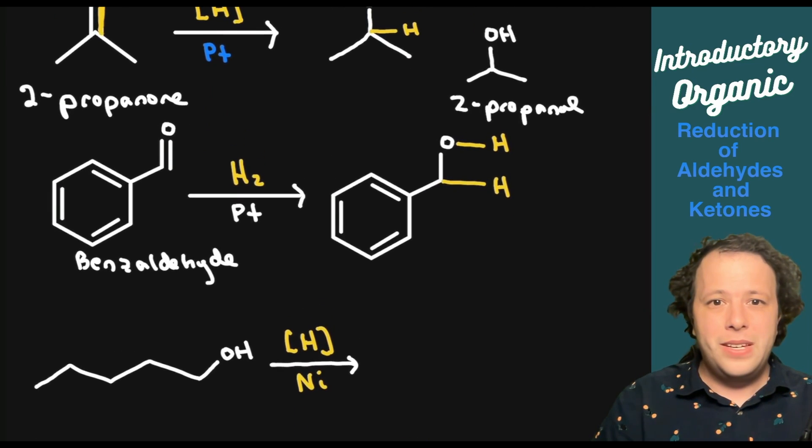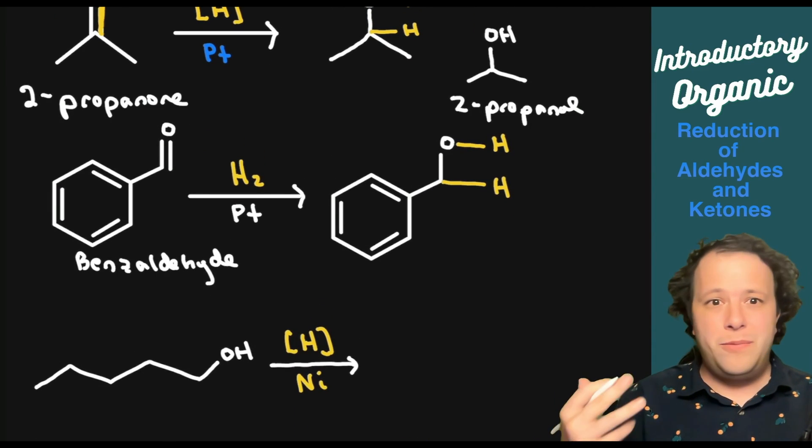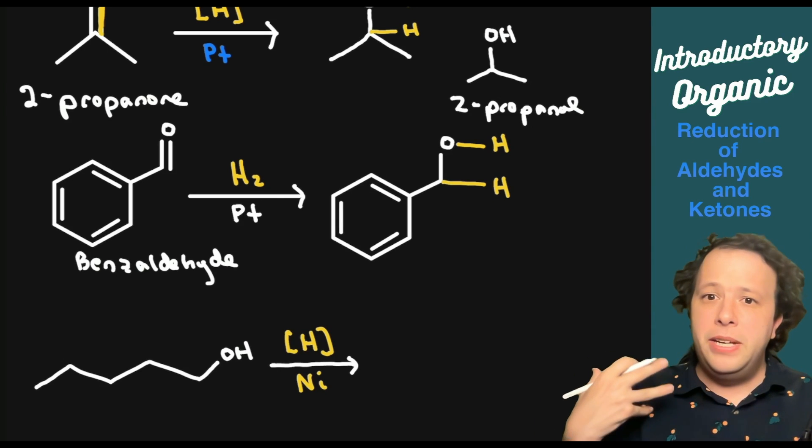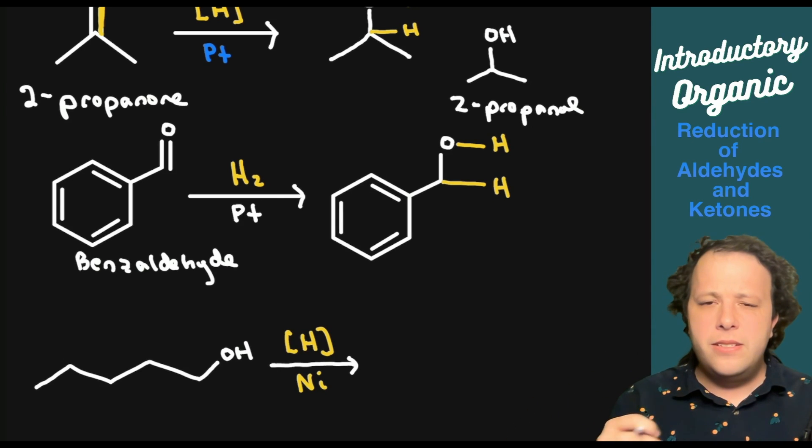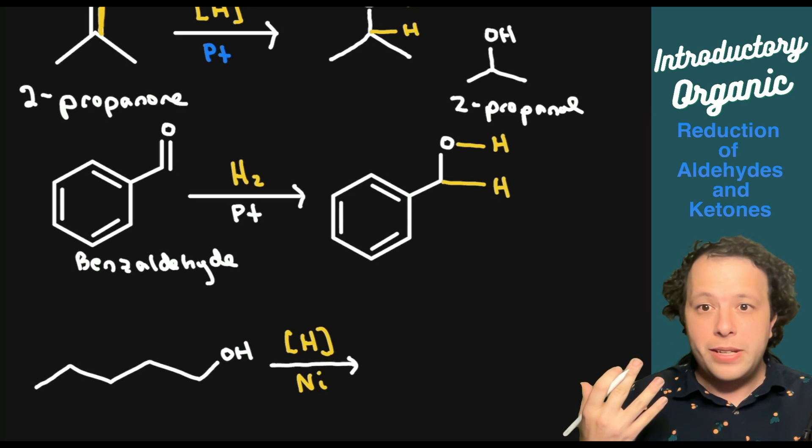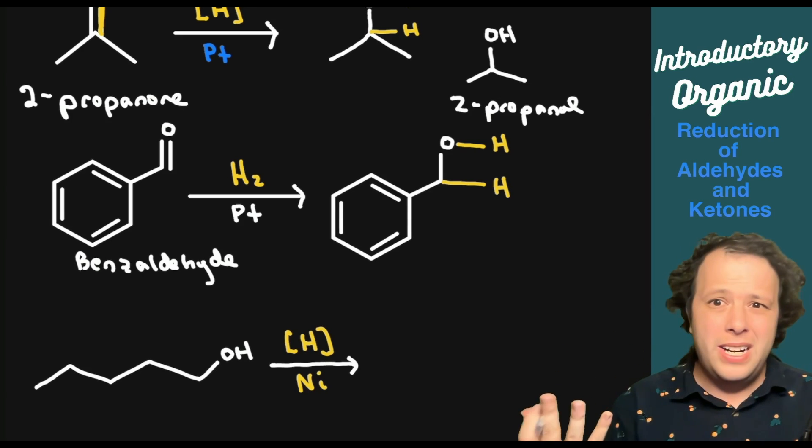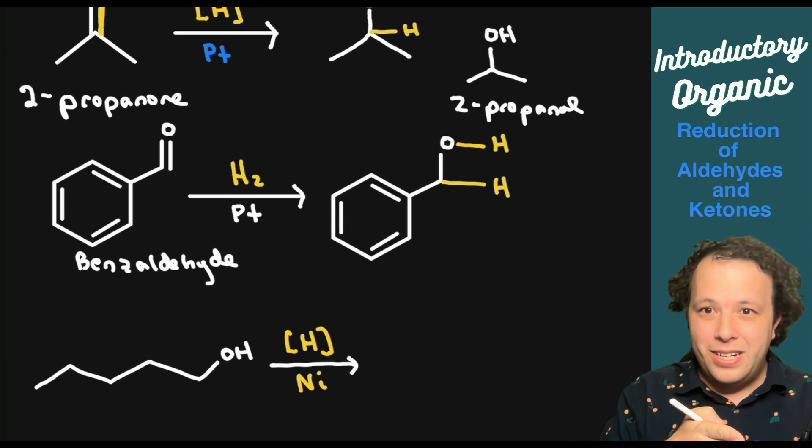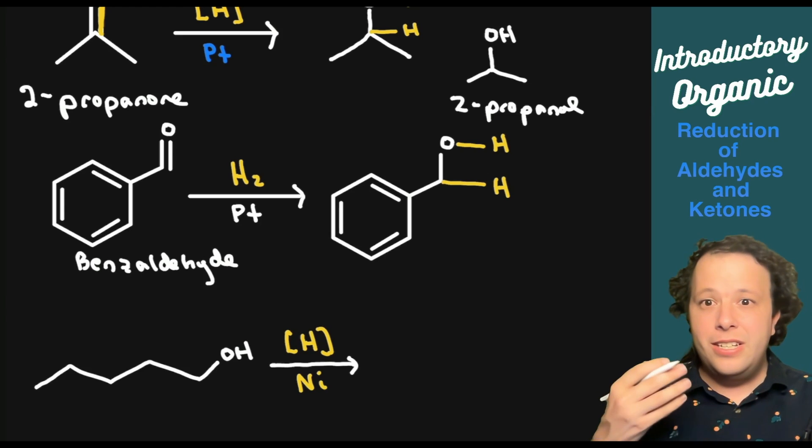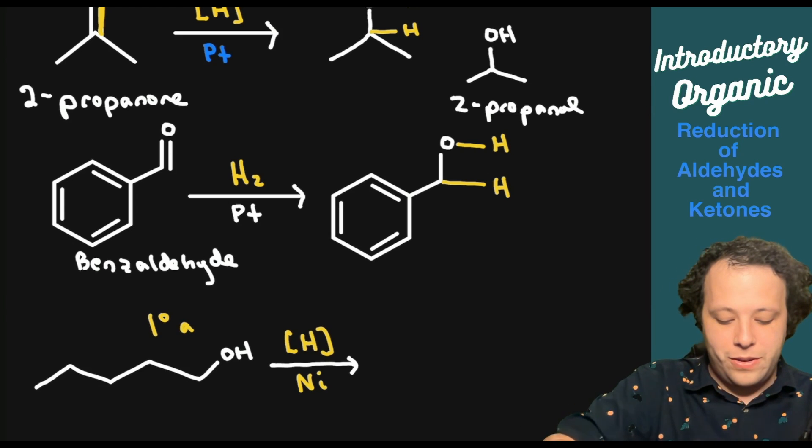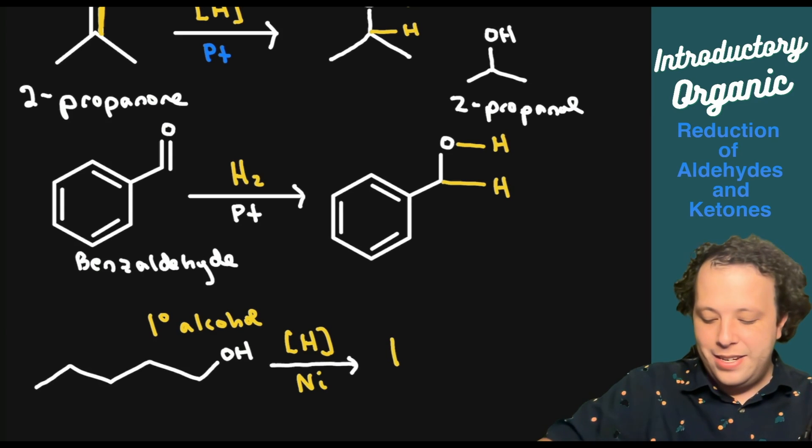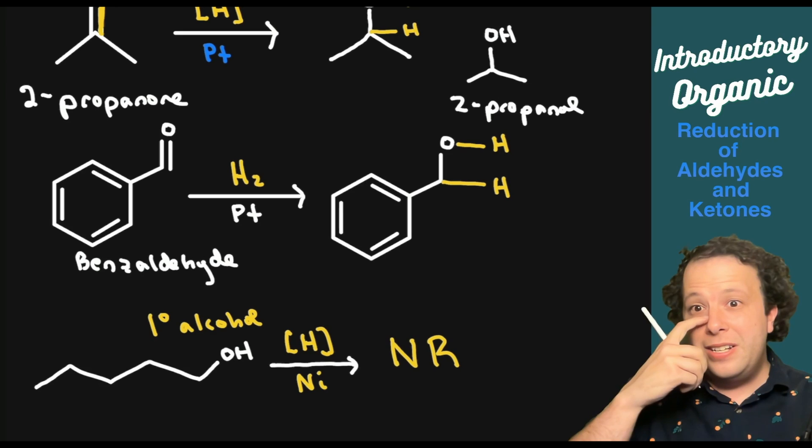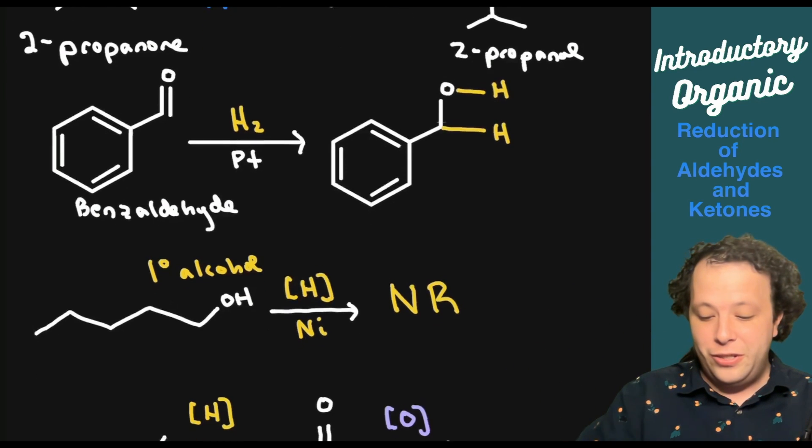Let's try another example. If I have the following one where we have an alcohol being reduced, how do we do that? I don't remember going over an example like that. Sometimes you're given a reaction that just can't happen. If you remember, reduction occurs if you have a ketone going to a secondary alcohol and aldehyde to a primary alcohol. In this case, you're starting with a primary alcohol, meaning it can't go through reduction. We're going to write no reaction.